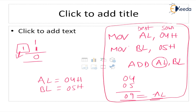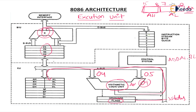AL comma 04 — that 04 is source and destination is AL. The data goes to AL; AL is 04, BL is 05. After ADD AL, BL, the addition result is again stored in AL. The size of the AL register is 8 bit. In the next class, we will clearly explain the register organization of 8086 — what is the use of AX, BX, CX, DX, the pointer registers, and index registers. Each register will be clearly explained in the next class. Thank you, my dear students.